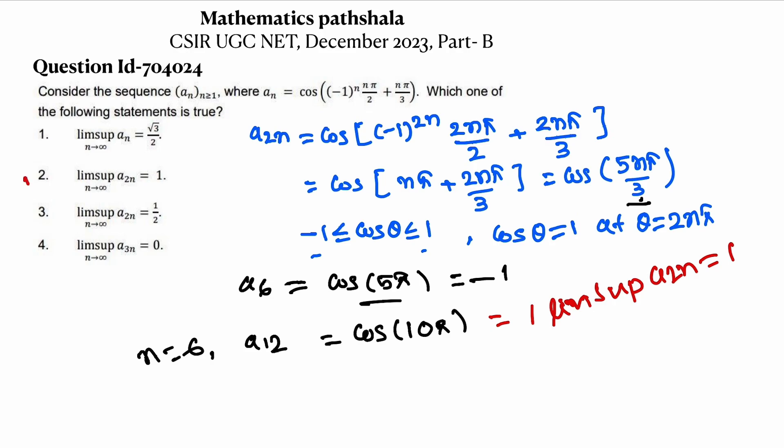So option 2 is true and option 3 should be false because it is given half.